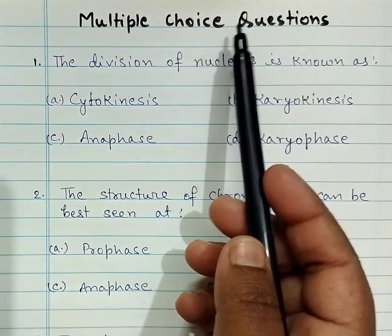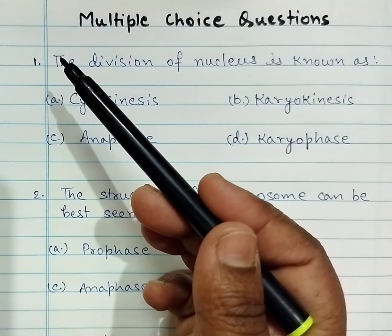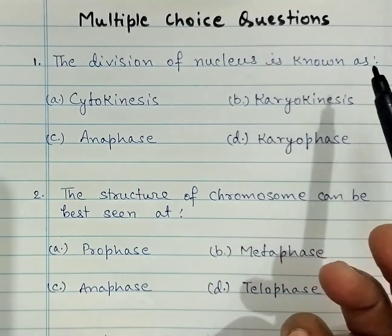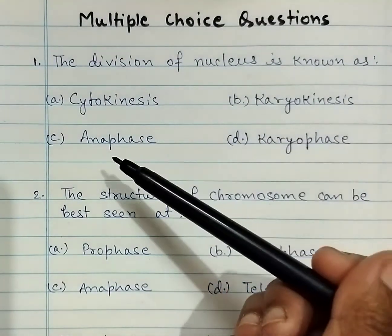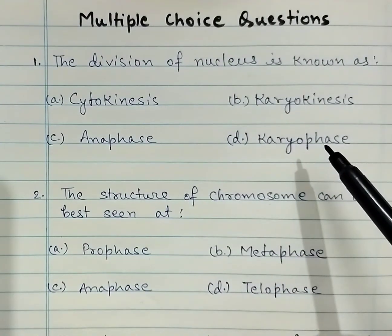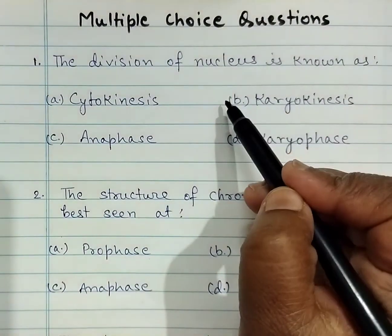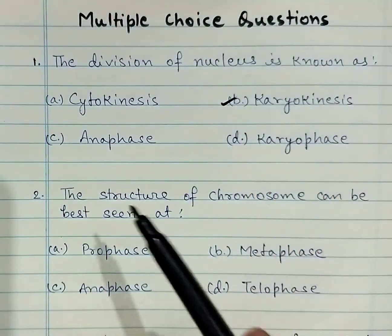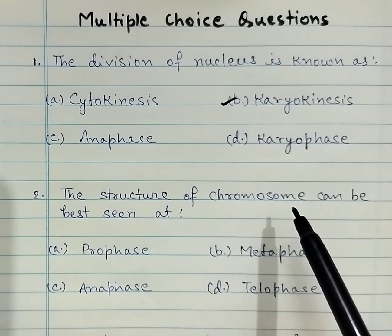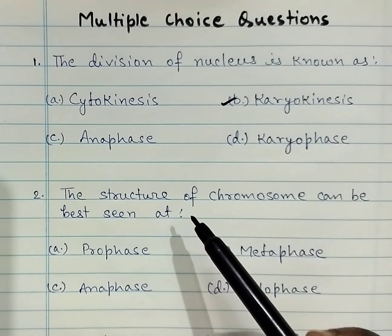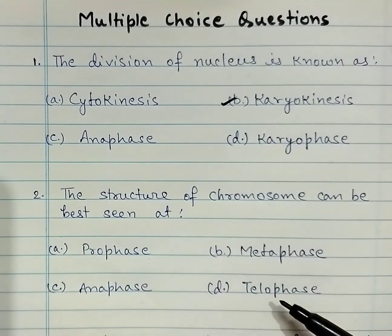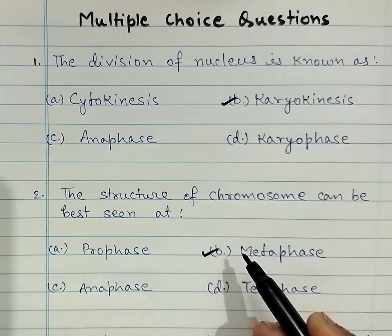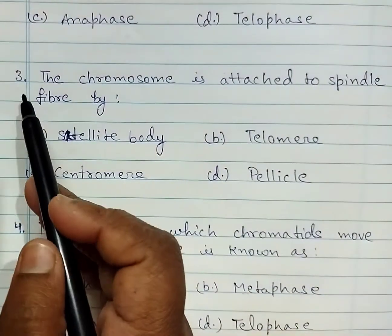Welcome to the multiple choice question session. Question number one: the division of nucleus is known as — option A: cytokinesis, B: karyokinesis, C: anaphase, D: karyophage. The correct answer is karyokinesis. Question number two: the structure of chromosome can be best seen at — A: prophase, B: metaphase, C: anaphase, D: telophase. Correct answer is B: metaphase.